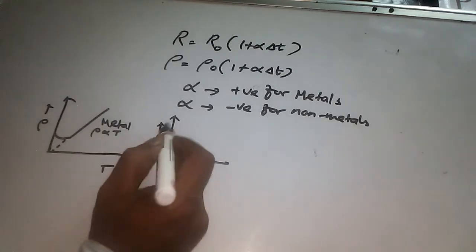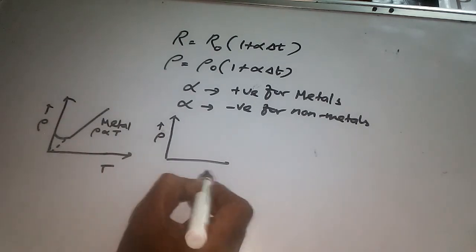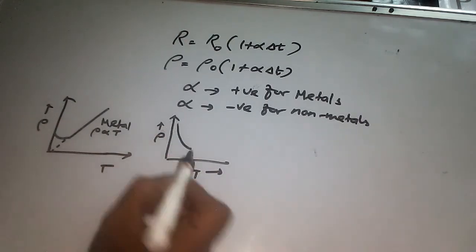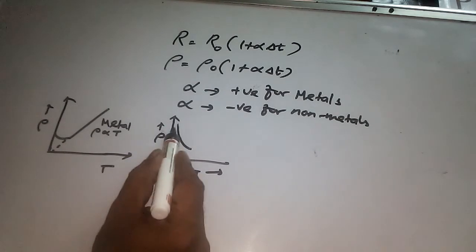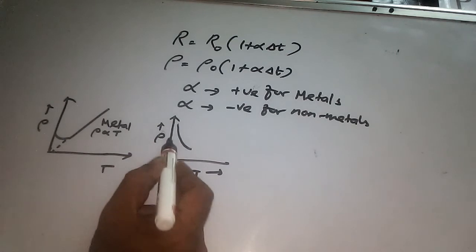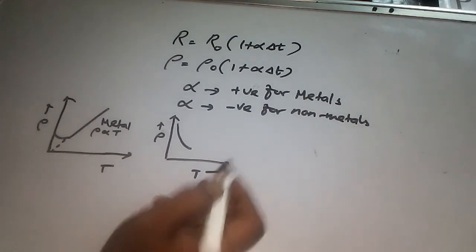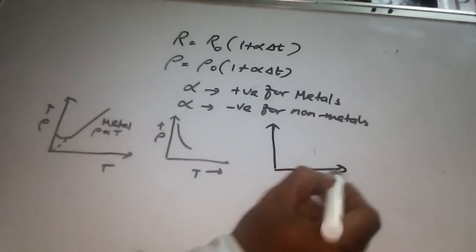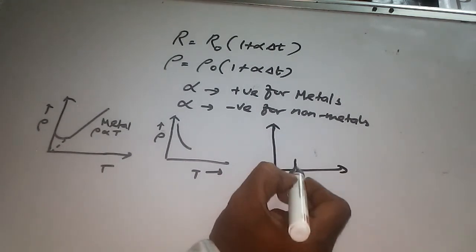The curve is like this. Initially at low temperatures, the resistivity of the semiconductor is high, but as temperature increases, the resistivity of semiconductors decreases with increasing temperature.